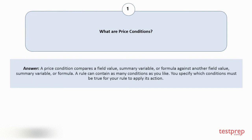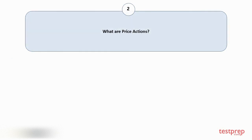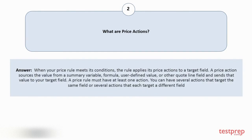Question number two: What are price actions? When your price rule meets its conditions, the rule applies its price actions to a target field. A price action sources the value from a summary variable, formula, user-defined value, or other quote line field and sends that value to your target field. A price rule must have at least one action; you can have several actions that target the same field or several actions that each target a different field.